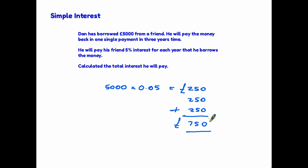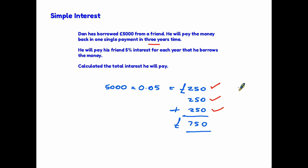And that really is it for simple interest. You simply choose the method you want to use to find the percentage of an amount — whether you use a fraction, break it down to find ten percent and half it, or use a decimal. Find the amount for one year, then multiply by the number of years. So you could simply have done 250 times three years: 750 pounds.